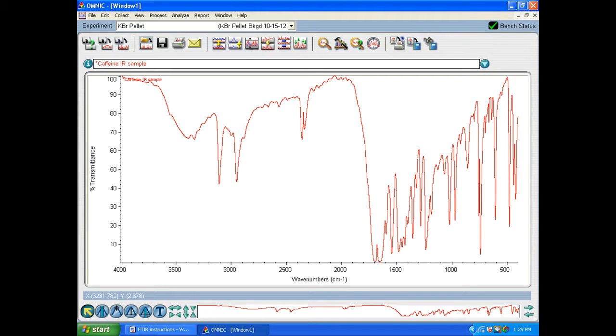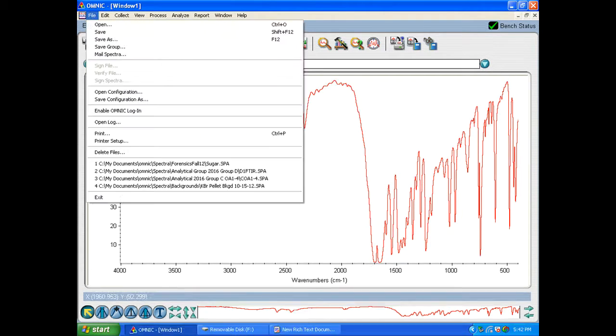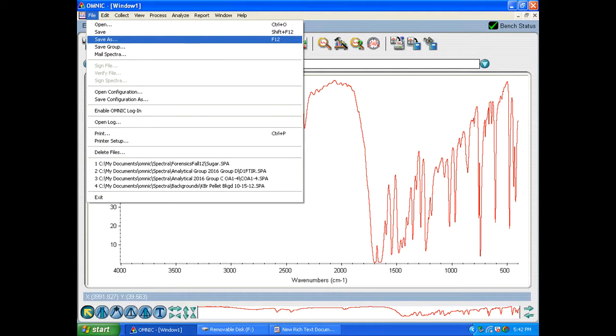If you need to save your spectra all you have to do is go up to file and then save. And you can choose where to save it and choose what to name it. So in this case we'll call it caffeine IR sample like we had before.